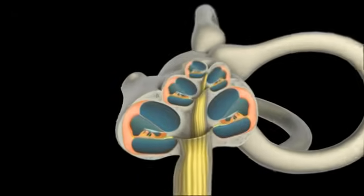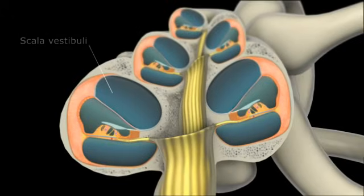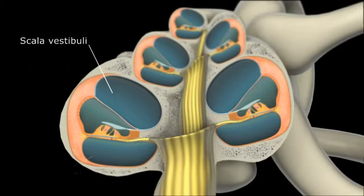In cross-section, the uppermost chamber is called the scala vestibuli. The oval window is situated at the base of this chamber. The lowermost chamber is called the scala tympani, at the base of which the round window is located. Both the scala vestibuli and scala tympani contain perilymph.